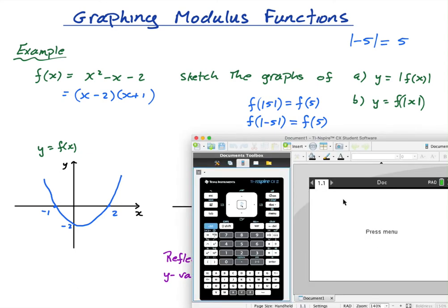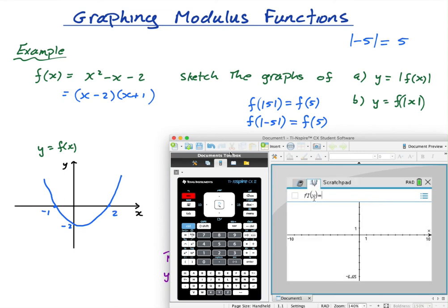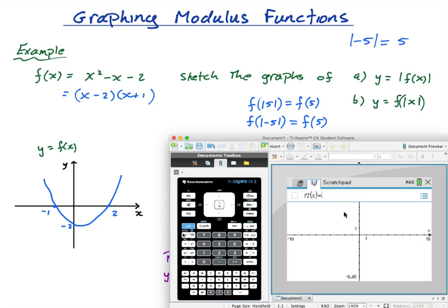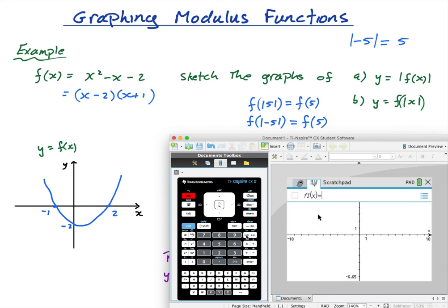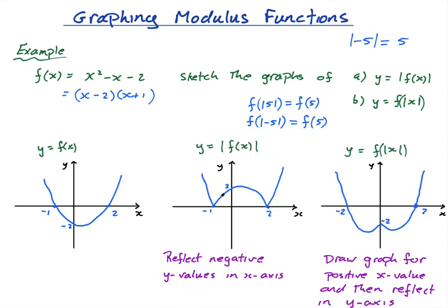Now let's graph these on the calculator. In the graph menu, to get the modulus signs I press the button beside the nine. Be careful — there is a different line symbol that is not a modulus sign. Inside the modulus I put x squared minus x minus 2, and there you go — that is the graph I drew by hand, not quite as neat, but close enough.